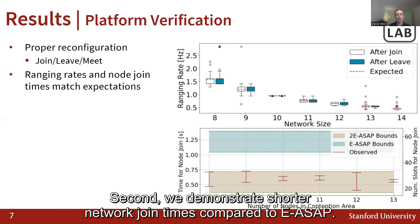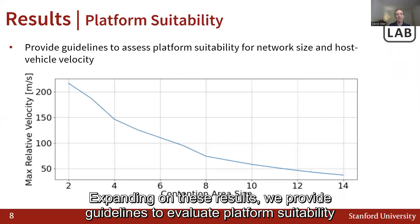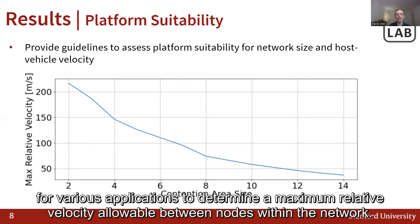Second, we demonstrate shorter network join times compared to EASAP. Expanding on these results, we provide guidelines to evaluate platform suitability for various applications to determine a maximum relative velocity allowable between nodes within the network.